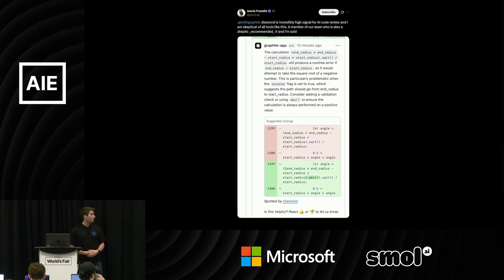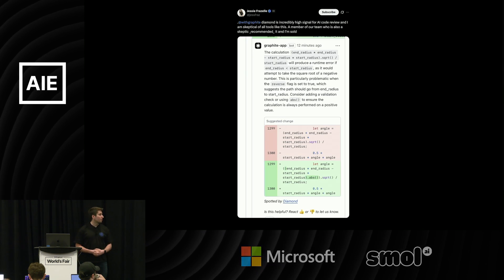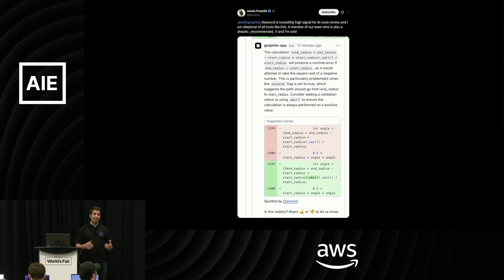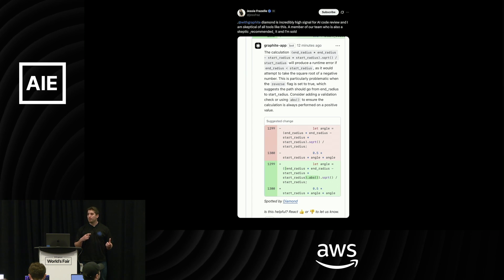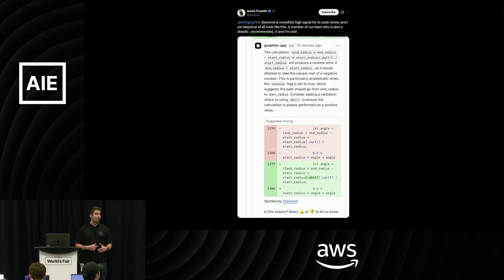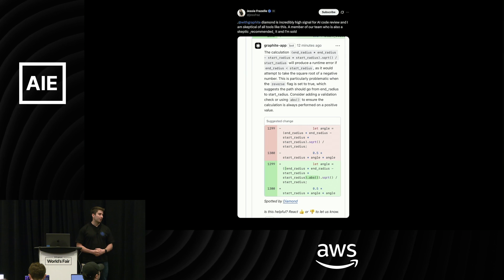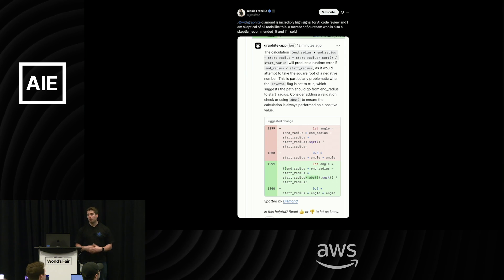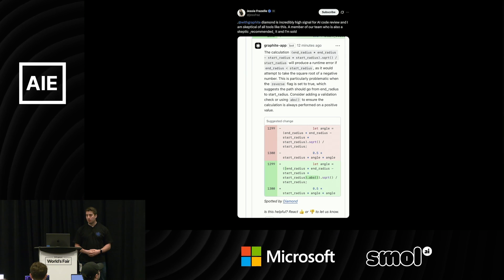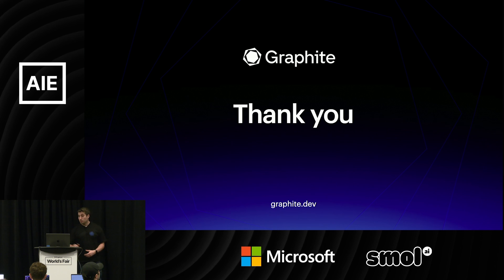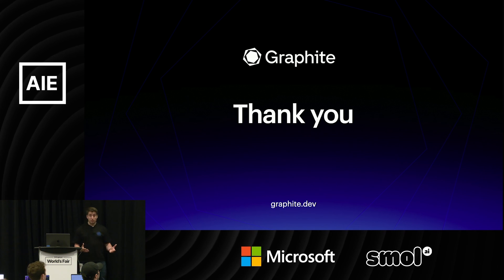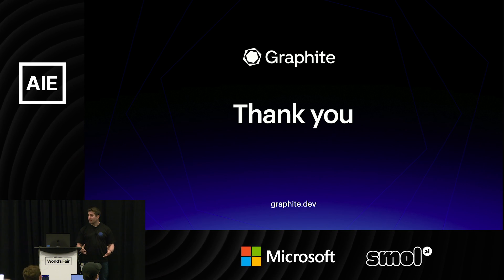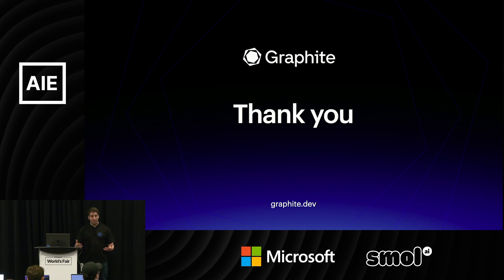Here's an example that came up on Twitter this week from our bot that found that in certain instances, there would be math being done around border radii that would lead to a division by a negative number and would then crash the front end. So to answer the question: it turns out AI can find bugs. That's the end of the talk — I'm kidding.